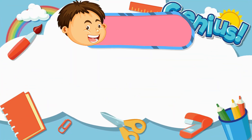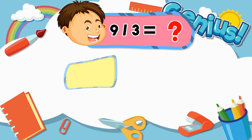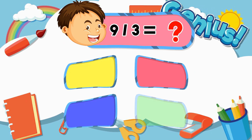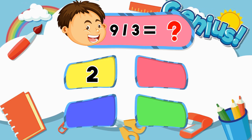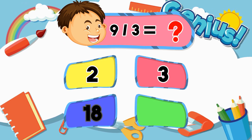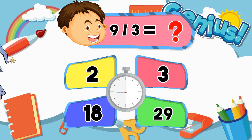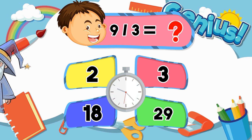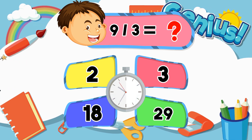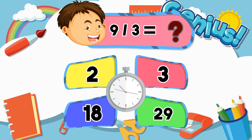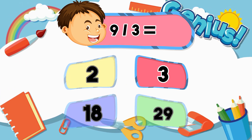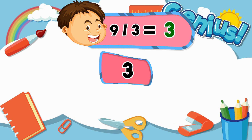What is 9 divided by 3? 2, 3, 18, 29. The correct answer is 3.